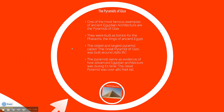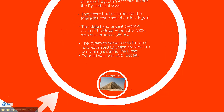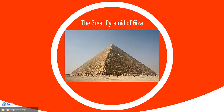The Pyramids of Giza. One of the most famous examples of ancient Egyptian architecture are the Pyramids of Giza. They were built as tombs for the pharaohs, the kings of ancient Egypt. The oldest and largest pyramid, called the Great Pyramid of Giza, was built around 2580 BC. The pyramids serve as evidence of how advanced Egyptian architecture was during its time. The Great Pyramid was over 480 feet tall. Here is a modern picture of the Great Pyramid of Giza.